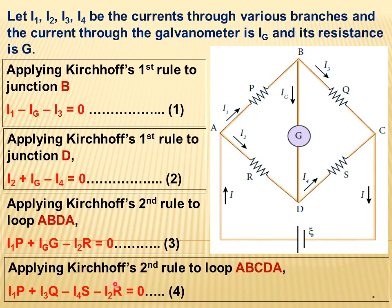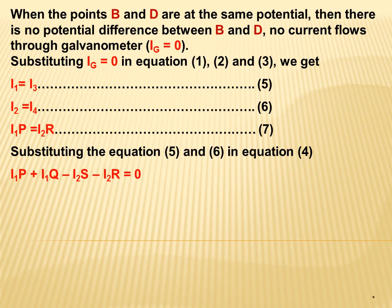Applying Kirchhoff's second rule to loop A-B-C-D-A: I1·P plus I3·Q minus I4·S minus I2·R equals zero — this is equation 4. When points B and D are at the same potential, there is no potential difference between B and D, so no current flows through the galvanometer and IG equals zero.